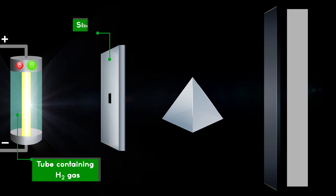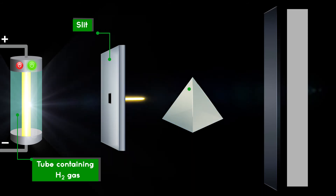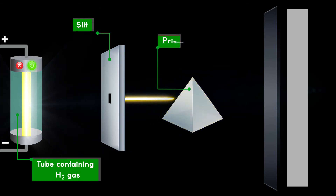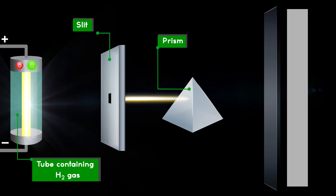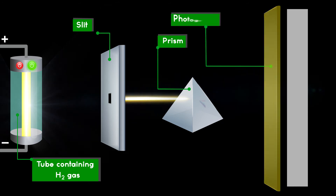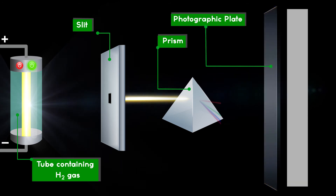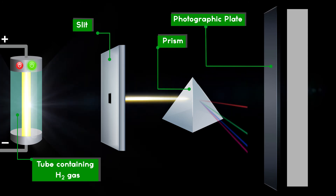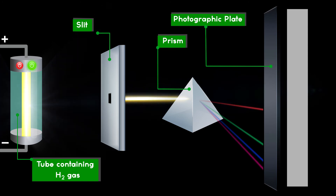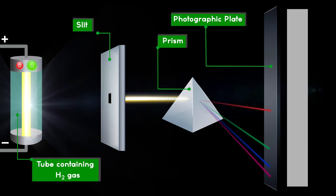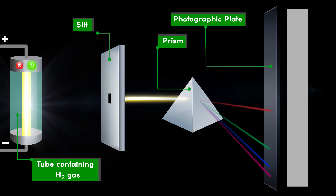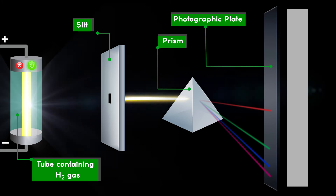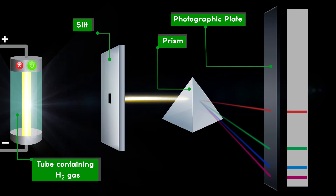A slit is placed in front of the emitted light to converge it, followed by a prism. The light ray is allowed to pass through the prism, which produces sharp lines of definite wavelengths. With the help of line spectrum, we can identify the type of gas.